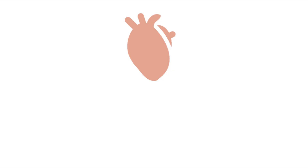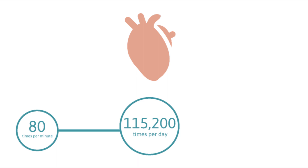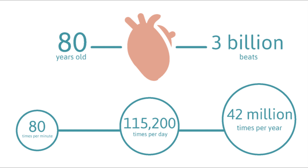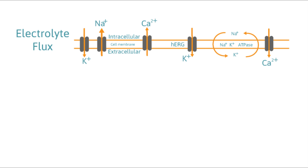The human heart typically beats 80 times in a minute, 115,200 times per day, or 42 million times a year. So if you live to be 80 years old, your heart would have beaten approximately 3 billion times. The rhythmic beating of the heart is attributed to the interplay of numerous ion channels expressed in the cardiac muscle.